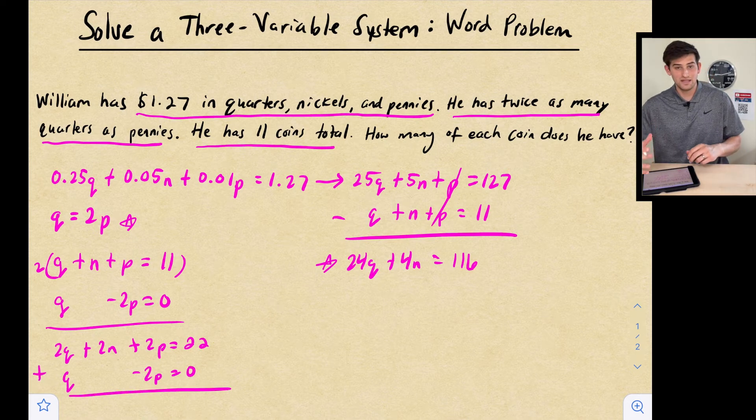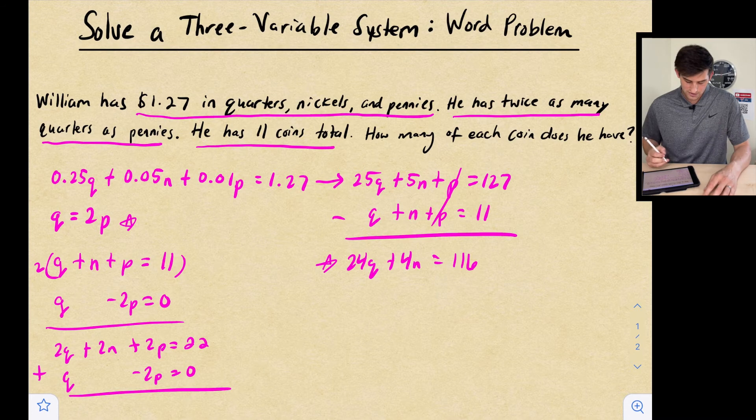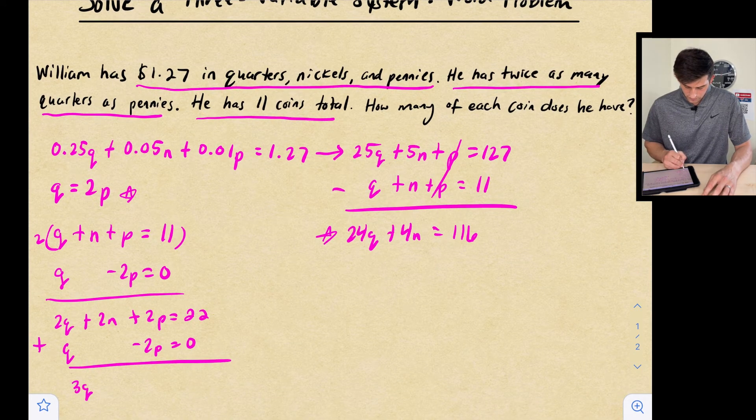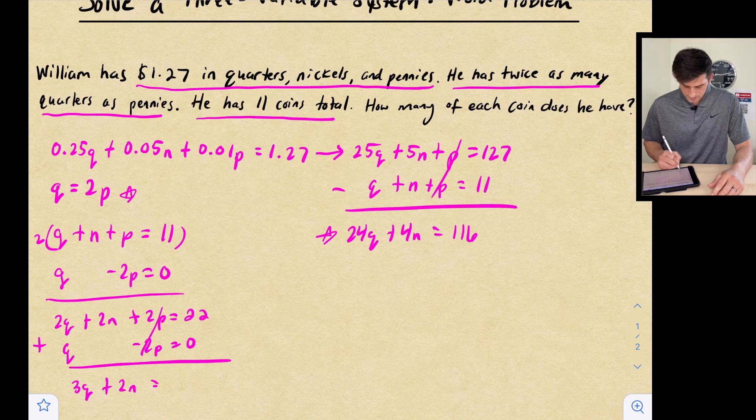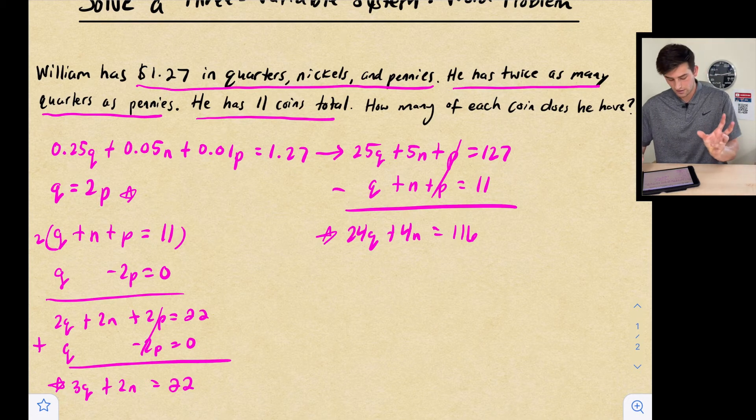So now since we have a 2P and a negative 2P, we can add these two equations together. So we have 2Q plus Q would be 3Q, 2N plus nothing, so 2N. Our P's cancel, and 22 plus zero is 22. So now we have this equation that has a star by it.